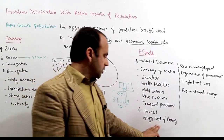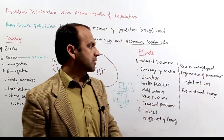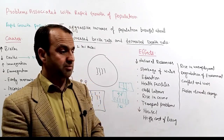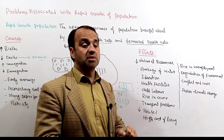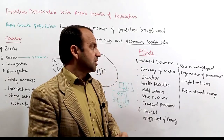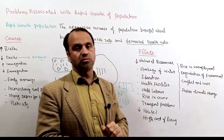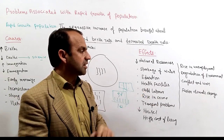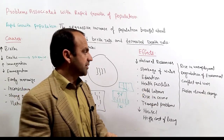High cost of living and a rise in unemployment are major problems caused by rapid population growth. As population increases, the cost of living rises significantly.